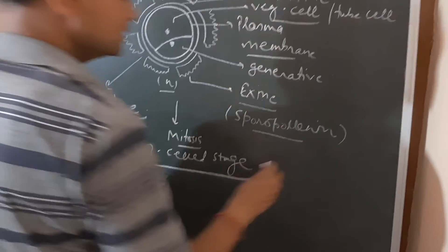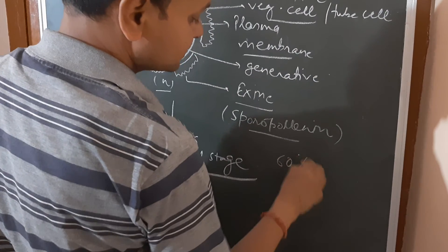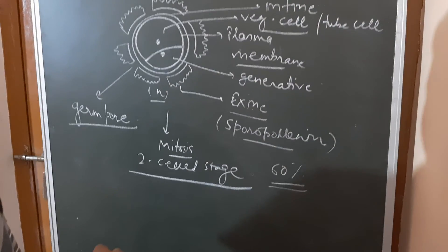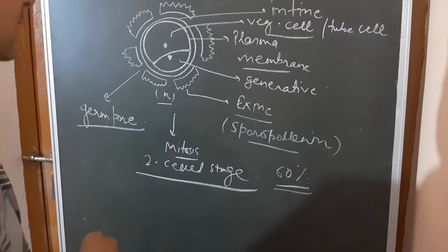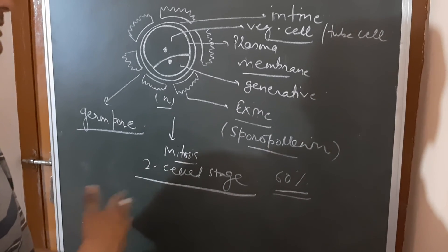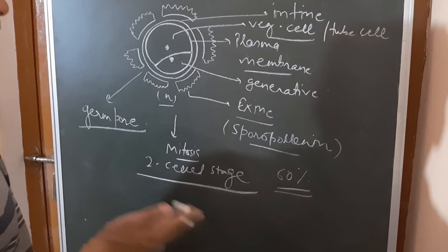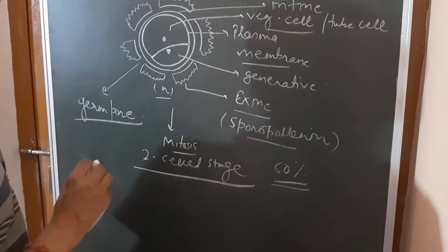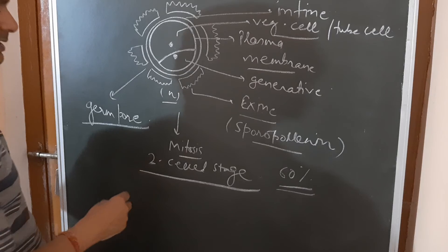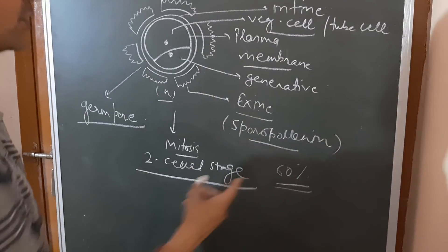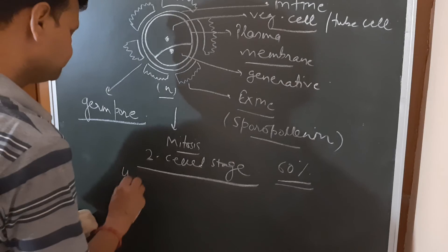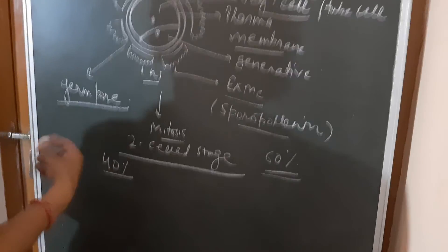In majority of angiosperms, they develop pollen grains that are released from the anther in 2-cell stage. This happens through the process of dehiscence when the fibrous layers and stomium break down. The developed pollen grains in 2-cell stage get released. This is in the majority, 60% of plants. In 40% of plants, they release their pollen in 3-cell stage, where the generative cell divides to form two male gametes.